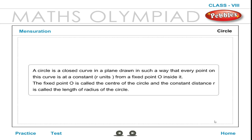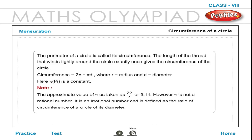A circle is a closed curve in a plane drawn such that every point on this curve is at a constant R units from a fixed point O inside it. The fixed point O is called the center of the circle and the constant distance R is called the radius. The perimeter of a circle is called its circumference. Circumference = 2πR = πD, where R is the radius and D is the diameter. π is a constant.